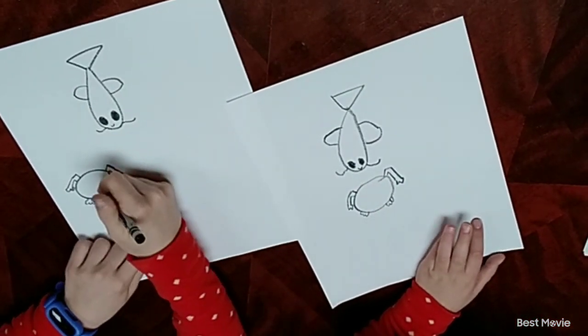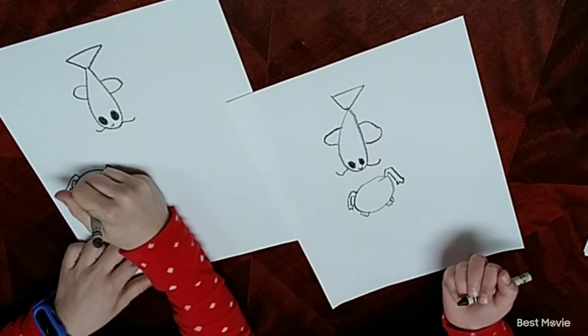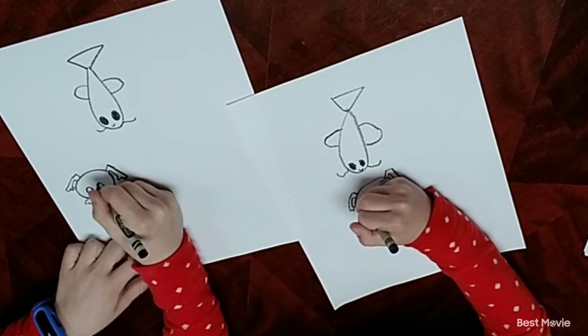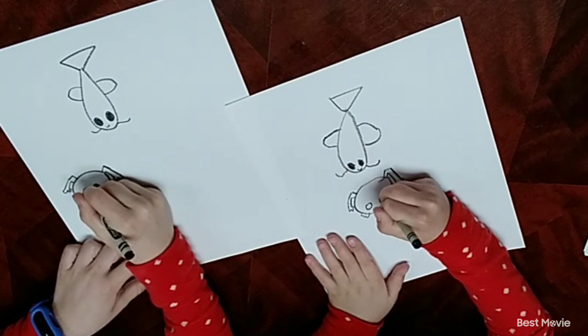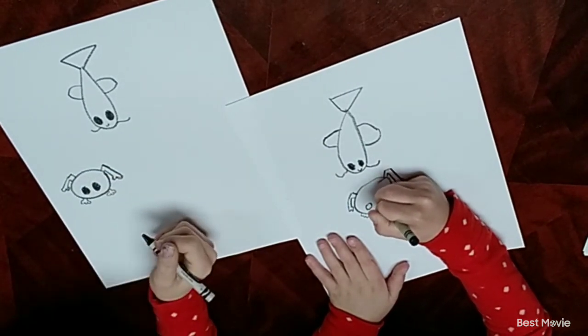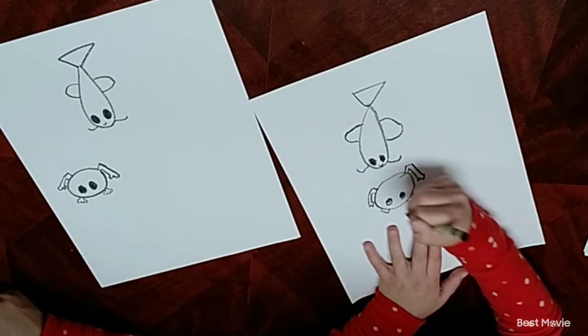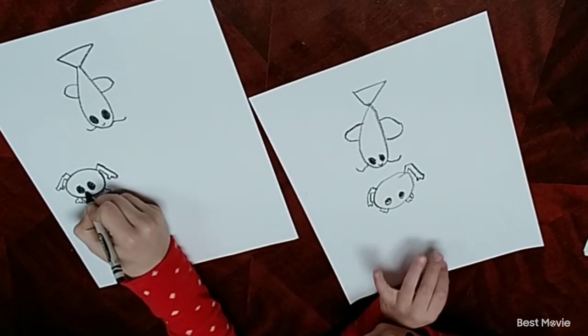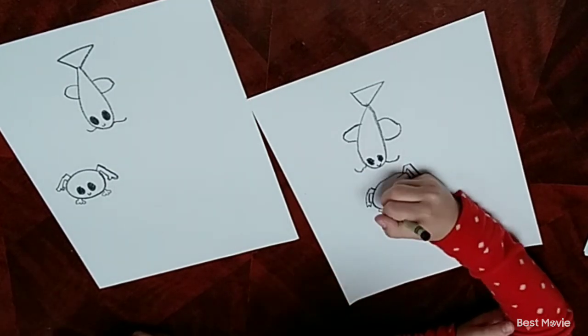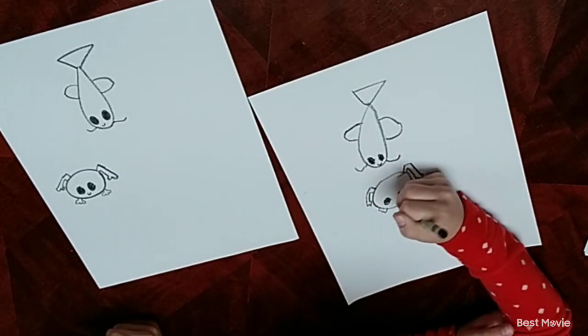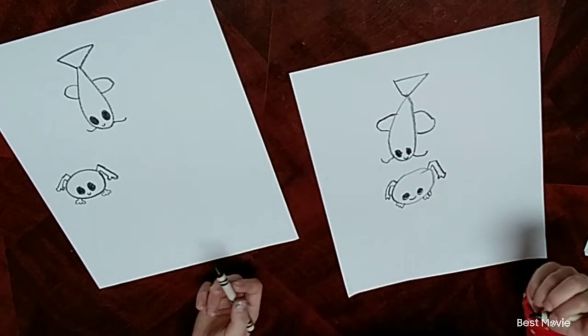Now of course it needs a face. So draw two ovals and color them in. And then draw a smiley face. Now of course we want to have a lily pad right?